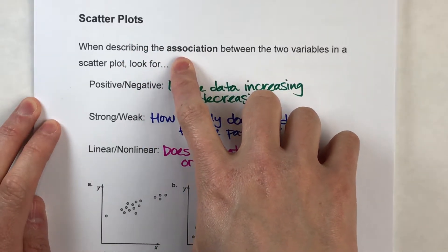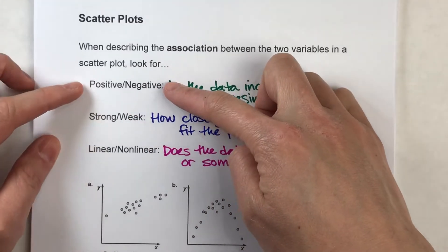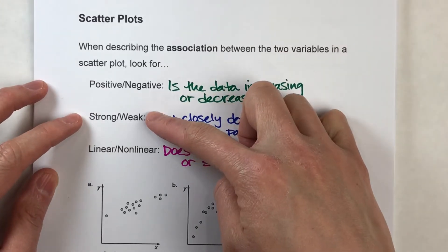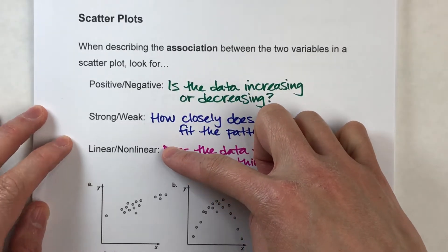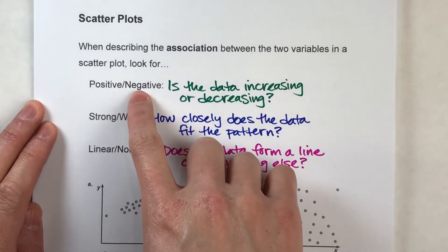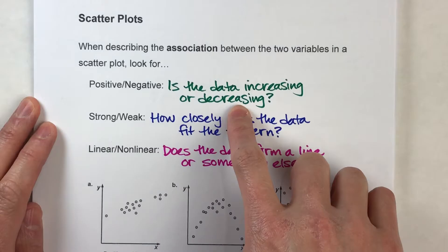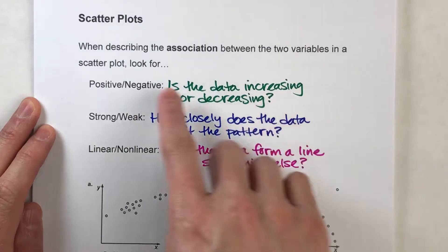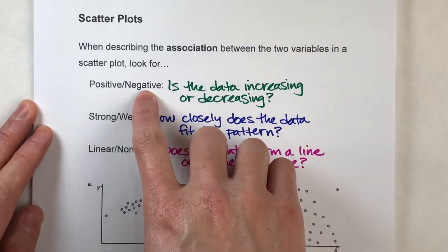There are basically three types of associations we look for in scatterplots. We look to see if there's a positive or negative association, if the association is strong or weak, and if it's linear or nonlinear. To determine if it's positive or negative, you look at the data and think: is the data increasing or decreasing as you move to the right? If it's increasing to the right, it's a positive association. If it's decreasing to the right, it's a negative association.